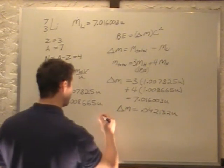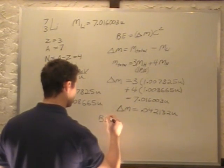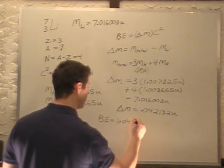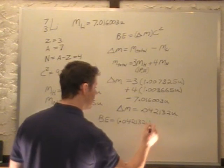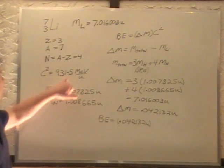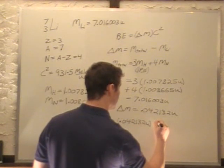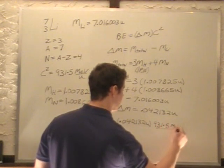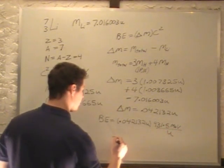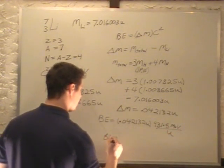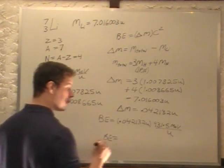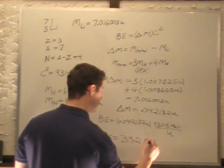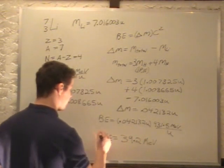So, that's our delta M. So, binding energy equals delta M of 0.042132U times C squared of 931.5 MeV per U. So, that gives us the binding energy in MeV of 39.2 MeV. And that is your final answer.